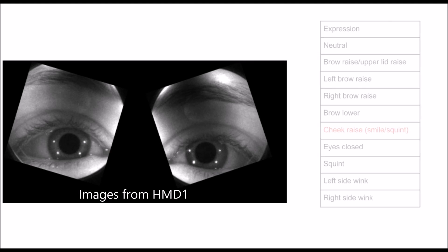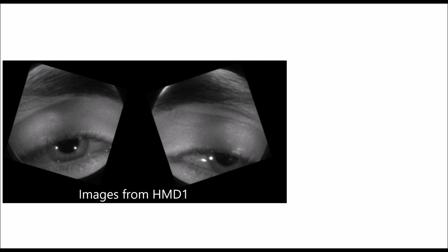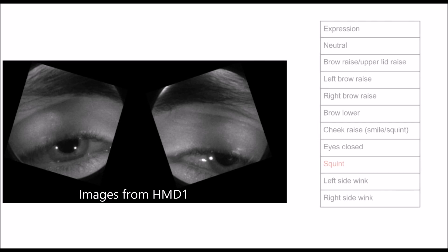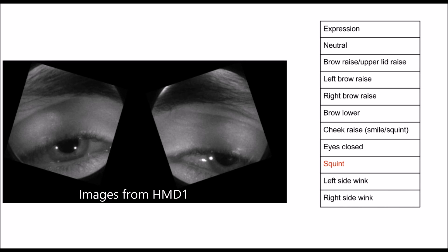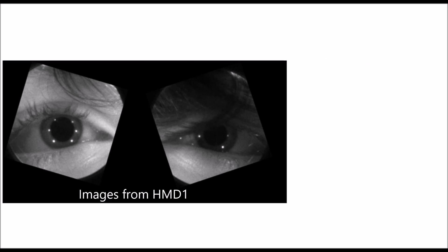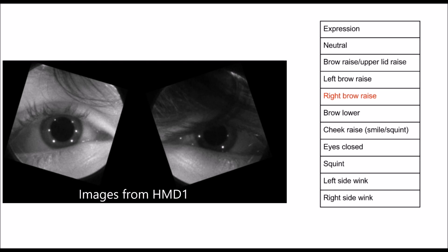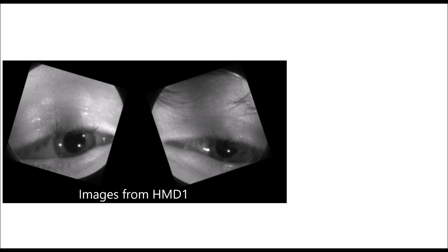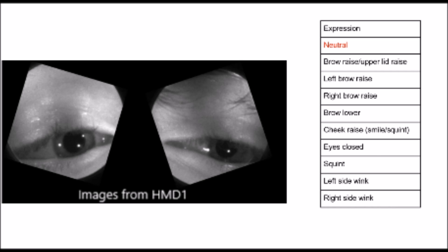To demonstrate the difficulty of this task, we will show some labeled examples of the input given to our network. Here is an example eye image from our dataset — of the 10 action units given in the paper, which would you think this was? This image shows cheek raise. This one shows squint. This one shows brow raise or upper lid raise. This one shows right brow raise. This one shows neutral. As you can see, there are a variety of different users and poses that make this a challenging task.